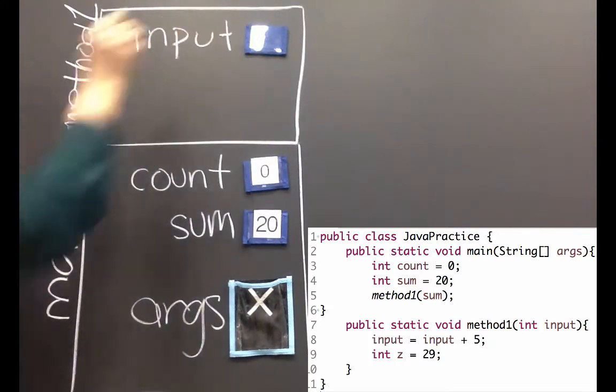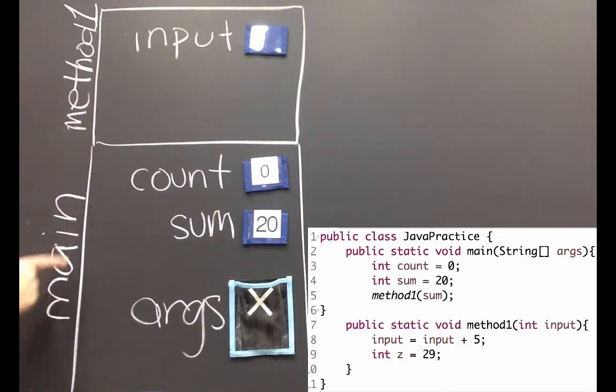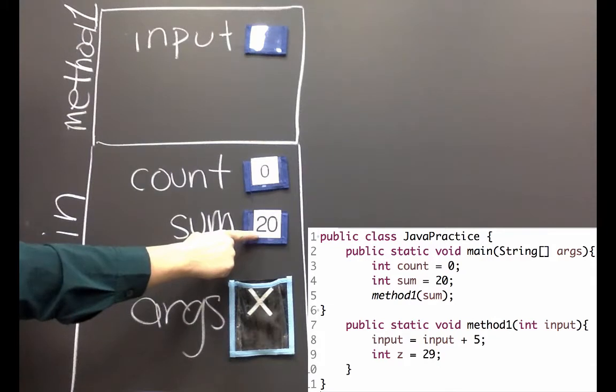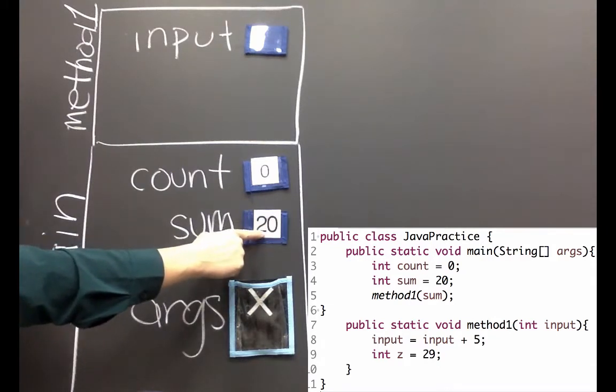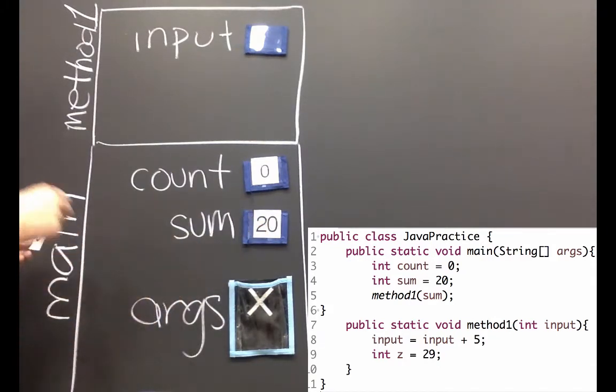When we called method one from inside of main we passed it the argument sum, so what we're going to do is take a copy of this variable which is 20 and put that in as input.